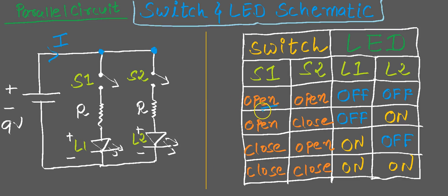Here is the solution to the exercise. The first case: when both switches S1 and S2 are open, the circuit is open and no current will flow through any LED. Neither LED receives any current and hence both L1 and L2 will be off. If switch 1 is open and switch 2 is closed, current will start flowing through the second path, through LED 2.